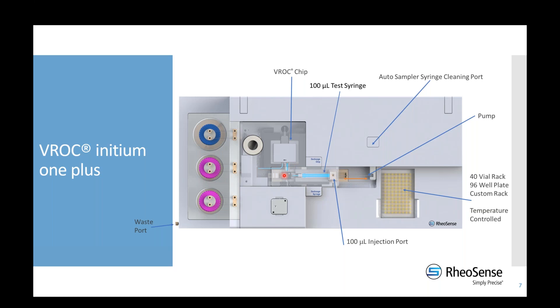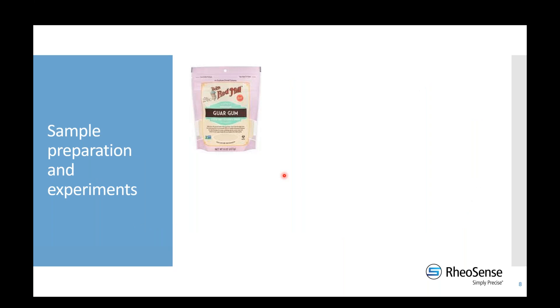This setup is ideal for thermal degradation experiments. Once the sample is loaded, it stays in the system for as long as we need, with no concern about evaporation. Temperature is controlled for both the sample in the syringe and in the chip. Christian will now go over the details of the experiments and share the data.